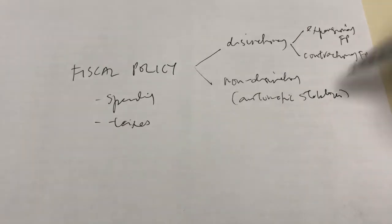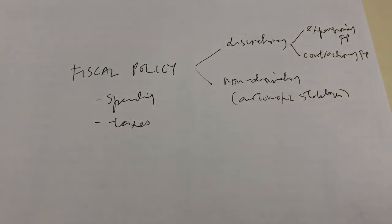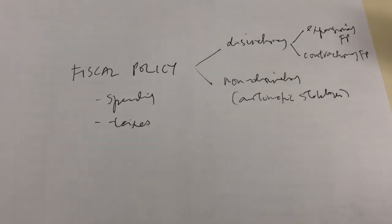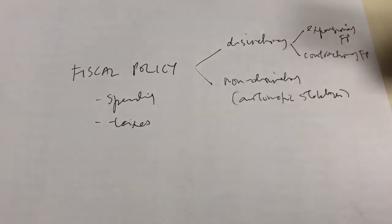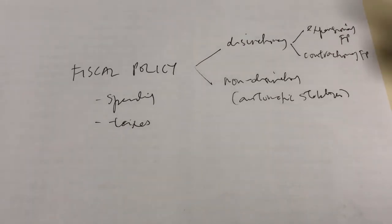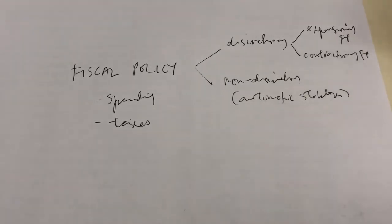The automatic stabilizer works because taxes adjust almost automatically via the tax system. When there's a recession — meaning income is down and output is down — the tax collected is also reduced, which encourages more spending and helps the economy pick up back to normal. When there's inflation, taxes collected increase, so higher taxes dampen or reduce consumption and bring the economy back to normal.